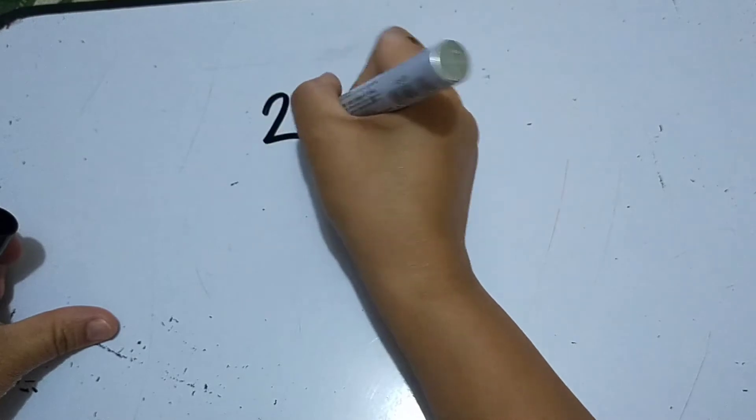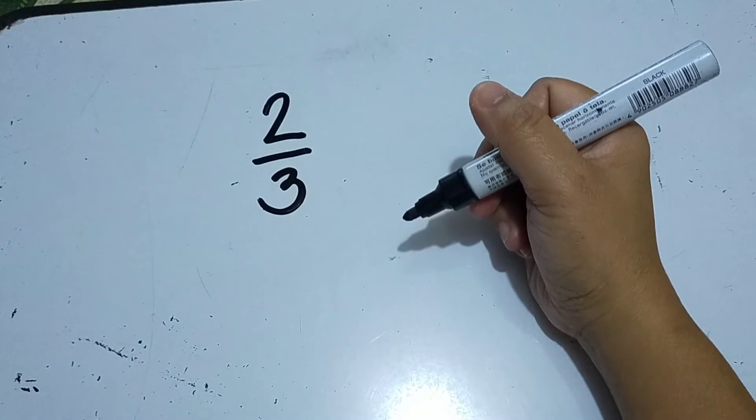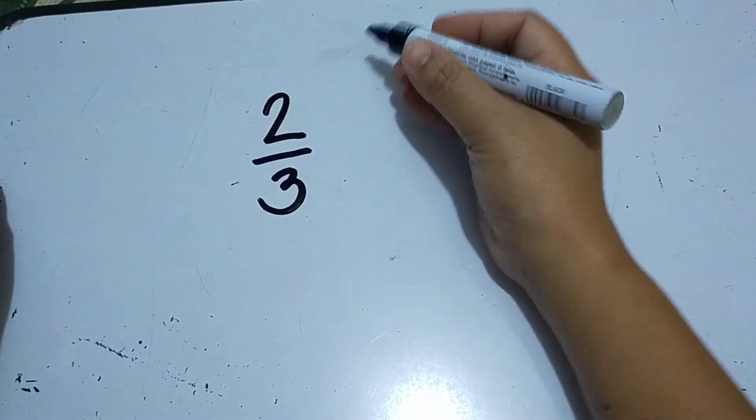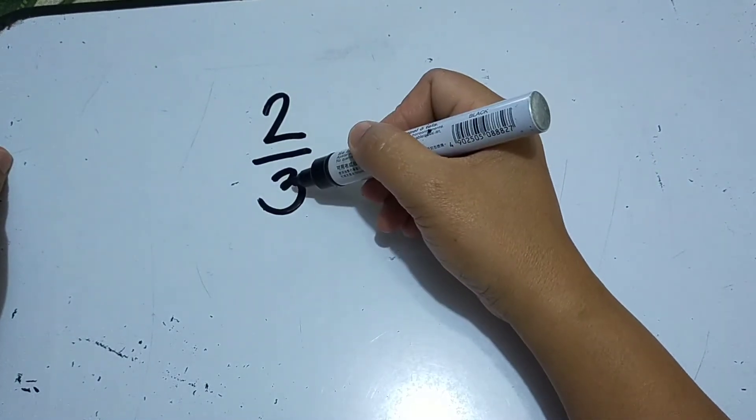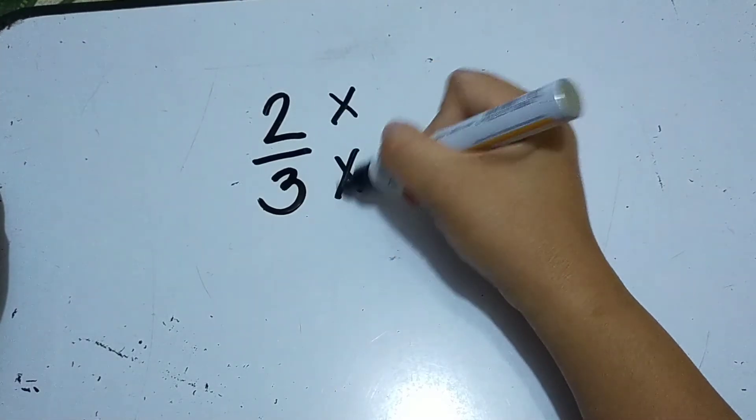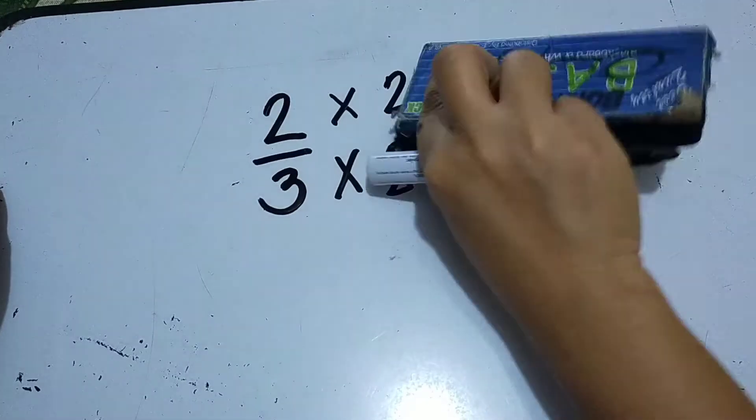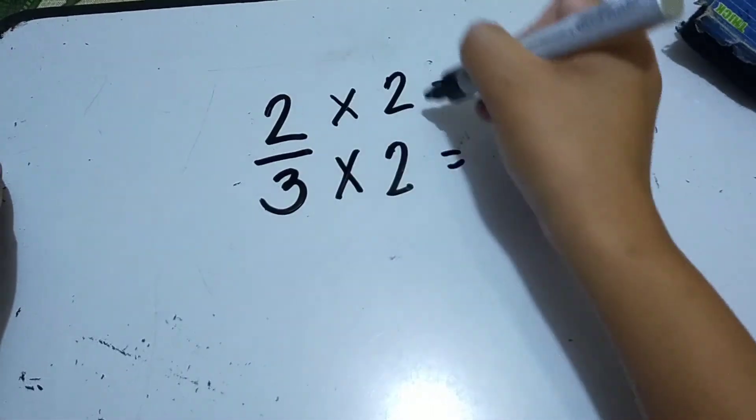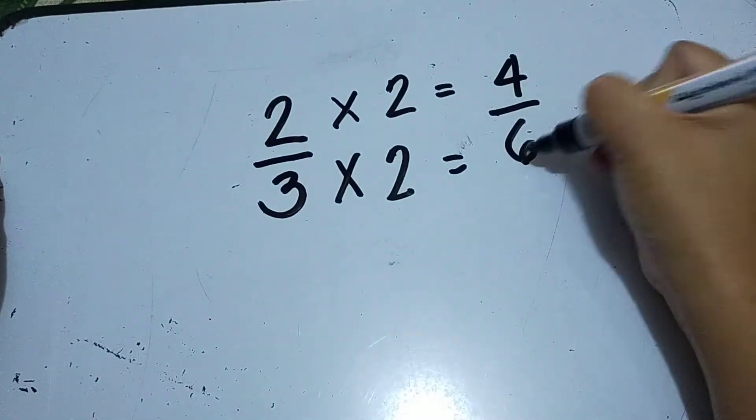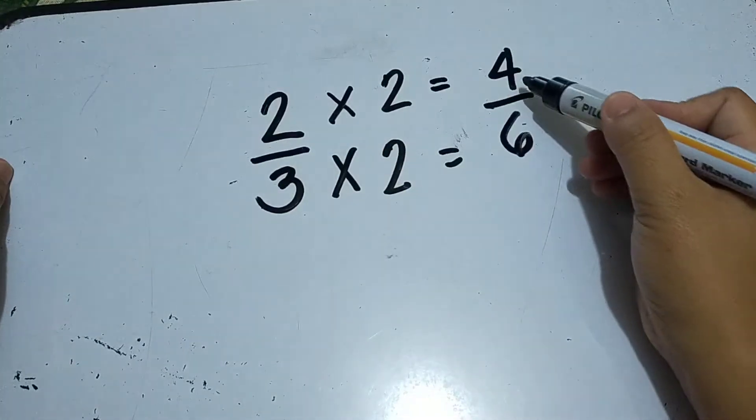Alright, example: 2 over 3. So how do we get the equivalent ratio? We can multiply both the numerator and the denominator by the same number. Let's say, by 2. 2 times 2 is equal to 4, 3 times 2 is equal to 6. So therefore, the equivalent ratio of 2 over 3 is 4 over 6.